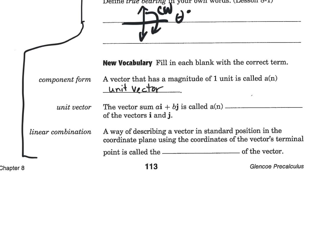The vector sum a·i plus b·j is called a blank of the vectors i and j. Linear combination. Yes, it is a linear combination.